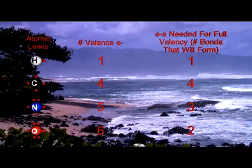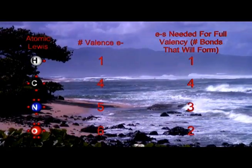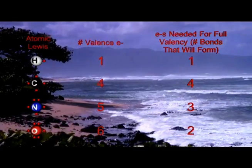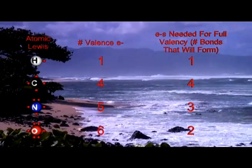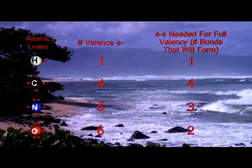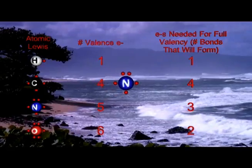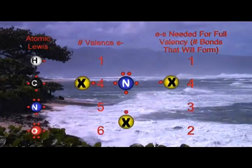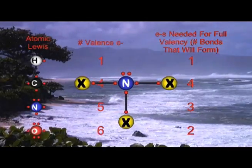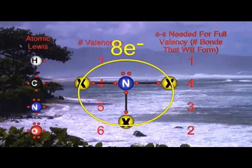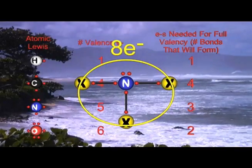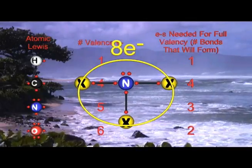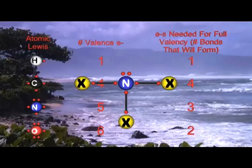Common elements within organic compounds are carbon, hydrogen, oxygen, and nitrogen. Examining the Lewis dot structures for these atoms tells us how many valence electrons are present and how many are needed for full valency. For example, nitrogen has five valence electrons and will need three more for an octet. It will gain these three additional electrons by forming three covalent bonds. Remember, each time a bond is formed, an atom has access to an additional electron. Thus, if an atom needs n electrons for full valency, it will form n bonds.